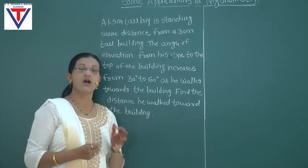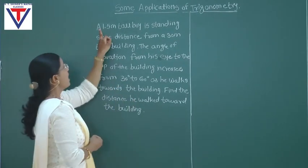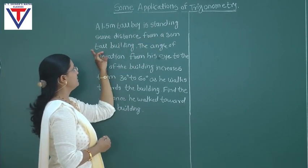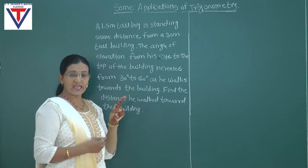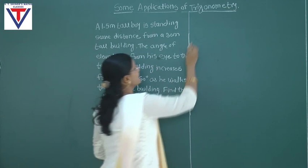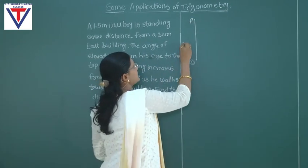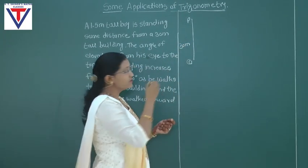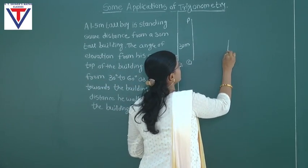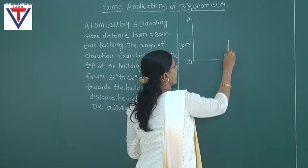You have to understand the example properly. You have to draw properly, then you can get the correct answer. A 1.5 meter tall boy is standing some distance from a 30 meter tall building. Let's consider this is our building. So PQ is the building. Its height is 30 meters, and the boy's height is 1.5 meters.